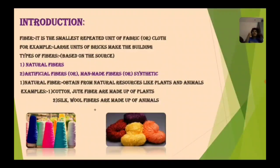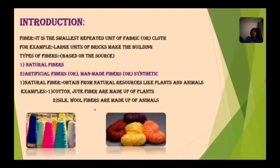Natural fiber is obtained from natural resources like plants and animals. For example, cotton and jute — cotton is obtained from the cotton plant, and jute is extracted from coconut. Silk is obtained from cocoons, and wool is obtained from sheep. So silk and wool are from animals, and cotton and jute are from plants.